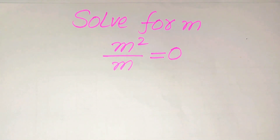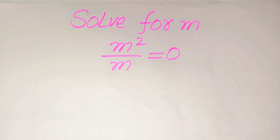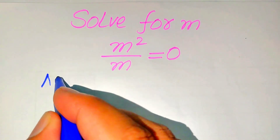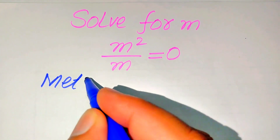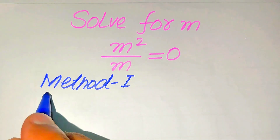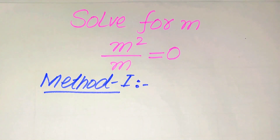Hello everyone. How to solve this problem: for the values of m, if we have m squared divided by m equals 0, we find all the values of m that satisfy this given equation. We solve this problem using two methods. If you have any other method in mind, please don't hesitate to write it in the comment section.